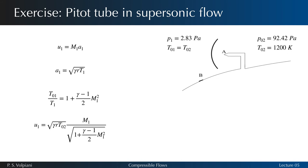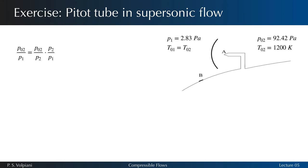To determine U1, it is therefore sufficient to calculate M1. We seek to determine M1 from the measured pressures P02 and P1. However, we do not have a formula that allows us to connect the static pressure upstream and the stagnation pressure downstream of the shock.